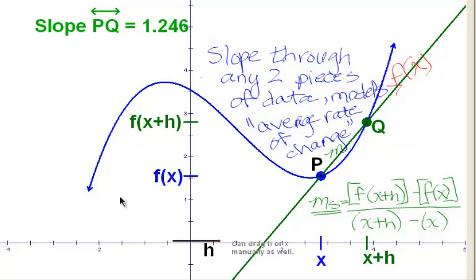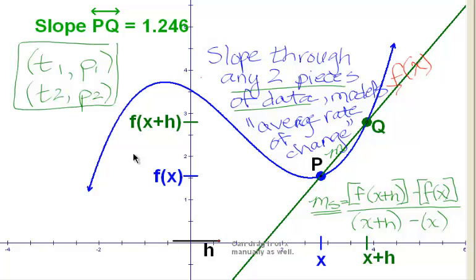We could have two data points that were position at any given time. We could have time one and time two. If we recorded our position, I'm going to call that p, at both of those different times, there are two pieces of data. If I were to find the slope through those two pieces of data, that would be the average rate of change of my position. That would be my average velocity. The slope of the secant line through those two points would be my average velocity.